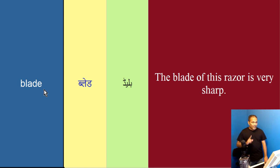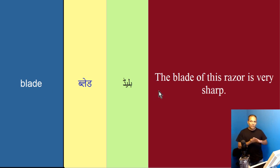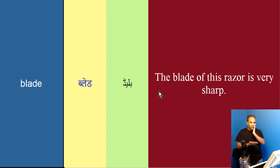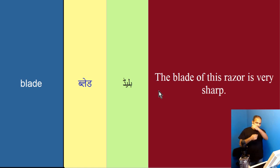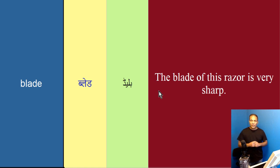Word hai blade, b-l-a-d-e. Blade ko hi kehta hain jisna safety blade hota hain — se uske safety razor hota hain, uske saamenay blade lagay hota hain, jisse shave kertay hain. Ya pher jisna koi kaatnay ki cheeze hota hain, choori hota hain, toh uska joo sharp sa hissa hota hain, usko blade kehta hain.